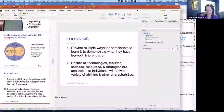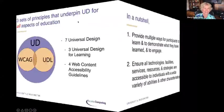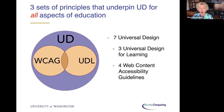There are three sets of principles that underpin universal design for all. There are the seven principles of universal design, the three principles of universal design for learning — which really zero in on the pedagogy and teaching practices — and then the Web Content Accessibility Guidelines for technology, which can range from fairly simple to very technical. We really need all three of these areas when we talk about education.